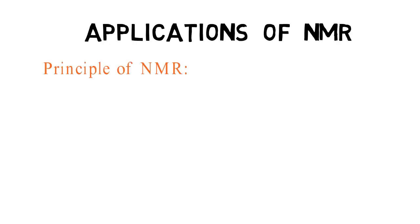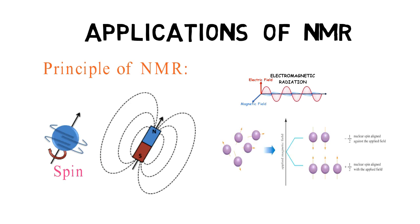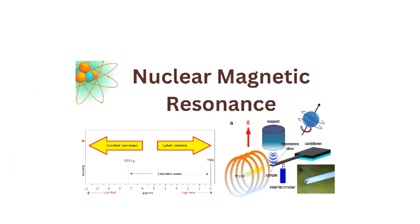The principle of NMR is based on the fact that certain atomic nuclei possess a property called spin. When placed in a magnetic field, these nuclei behave like tiny magnets with a quantized magnetic moment. The nuclei can exist in different energy states, and by applying radio frequency pulses, transitions between these energy states can be induced.